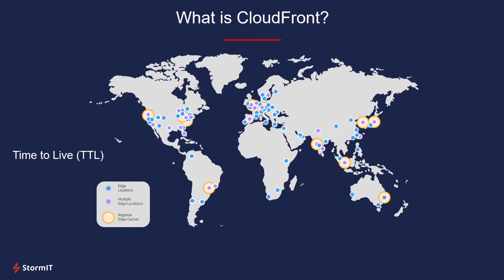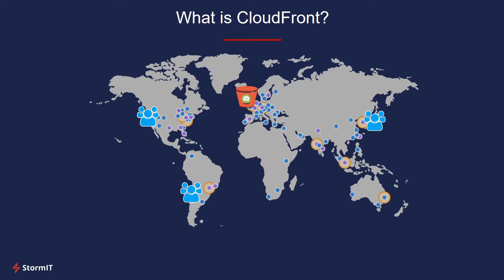Now let's take a look at the previous example but now with the use of CloudFront. We have our app for sharing and distributing photos, storing its data in an S3 bucket in Ireland. When users try to access the photos, they only have to access the edge location closest to them, and that edge location will pull the content from S3 — unless it's already cached. In that case, the exchange is just between the user and the edge location, making it super fast and smooth. That is the power of CloudFront: it brings content closer to the user, reducing latency and improving performance, resulting in a happy user.